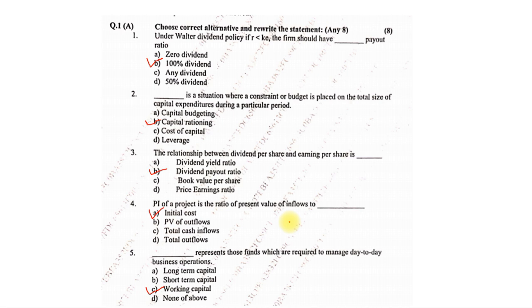Choose the correct alternative. First: under Walter's dividend policy, if r is less than ke, the firm should have 100% dividend payout. Second: dash is the situation where a constraint or budget is placed on the total size of capital expenditure during a particular period — the answer is capital rationing. Third: the relationship between dividend per share and earning per share is the dividend payout ratio. Fourth: PI of a project is the ratio of present value of inflow to initial cost. Fifth: dash represents funds required to manage day-to-day business operations — the answer is working capital.